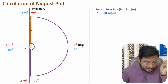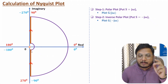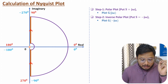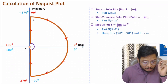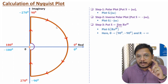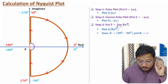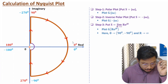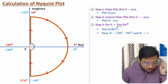The second line is the inverse polar plot, where we substitute s equals minus j omega — it is the exact replica of the first line. The third line is an outer curved line with radius that is infinite. For this line, in the system's transfer function we substitute s equals R times e to the power j theta, where R goes towards infinity and theta varies from 90 degrees to minus 90 degrees.